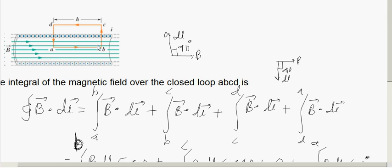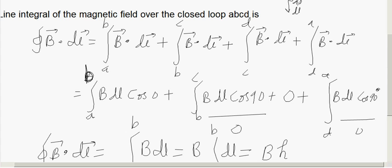Along AB, you got it as B into dl cos 0 because B and dl are in the same direction. The angle between B and dl is 0, whereas along BC, that is when you go like this, you got the angle between B and dl as 90 degrees, so cos 90 is 0. Also, CD lies outside the solenoid and the magnetic field is 0. And D to A again it is cos 90 and you got it as 0.